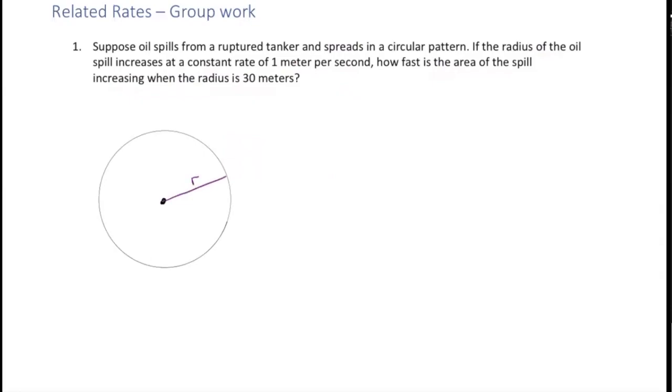Let's figure out our goal. They ask us how fast is the area of the spill increasing. So we want to know how fast the area of the spill is increasing, which is the rate of change for the area, dA over dt. So the change in area over the change in time. That's what we're looking for. I'll write goal here.